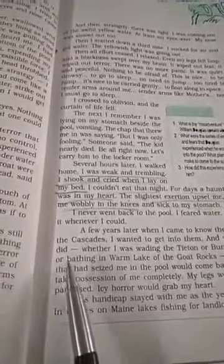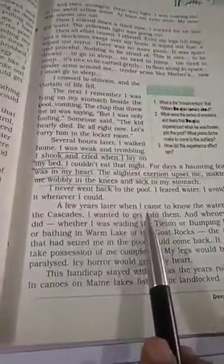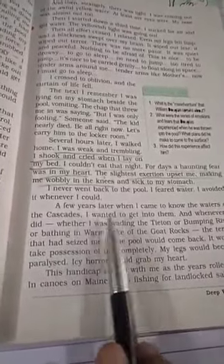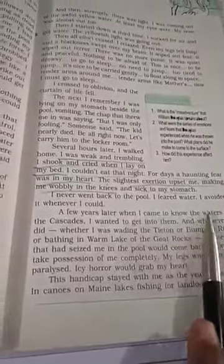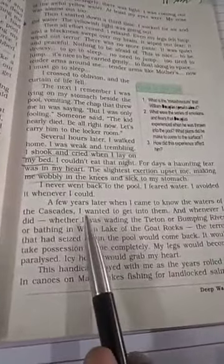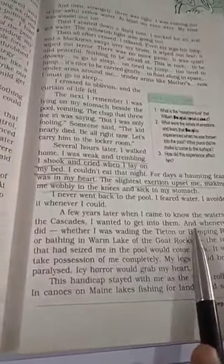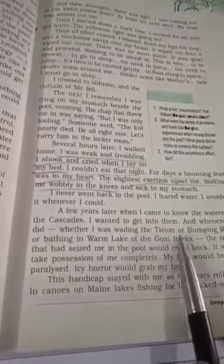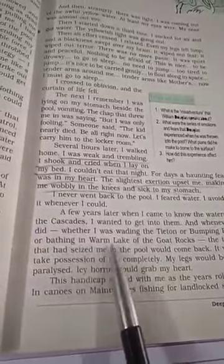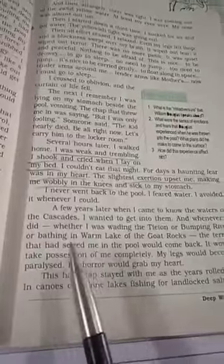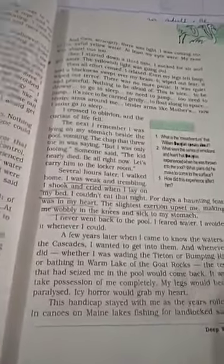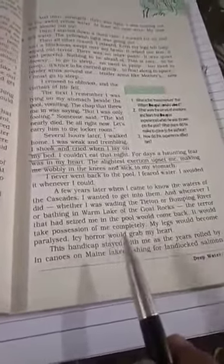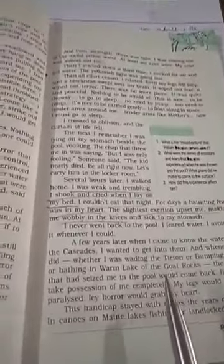Now next starts the third phase. It was a few years later when I came to know the water of the cascades, the waterfalls. Douglas was mature, he was an adult. He came to know about the waters of the waterfall. He wanted to get into them. And whenever I did, I tried going near the water - whether I was wading in the Tieton or Bumping River or bathing in warm lake. The terror that had seized me, that had captured me in the pool, it would come back. Douglas says, as an adult, whenever I tried going near any water body, the terror of water would have a firm grip over me.